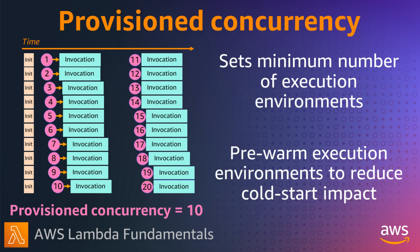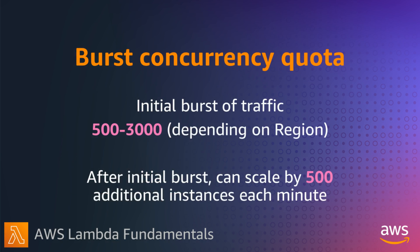Maybe a big sale at 8am or a TV show starting at 9pm. You can still burst using standard concurrency. There are two concurrency quotas to keep in mind. The burst concurrency quota gives you an initial burst of traffic for each function — between 500 and 3000 per minute, depending on the region — and then functions can still scale by 500 more instances each minute.